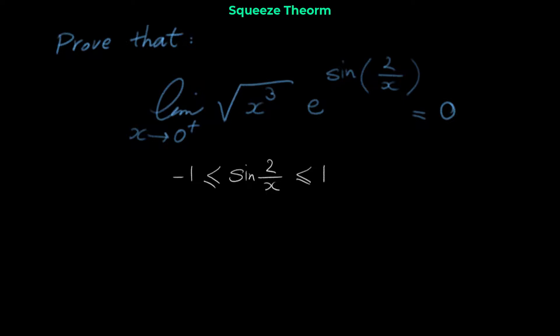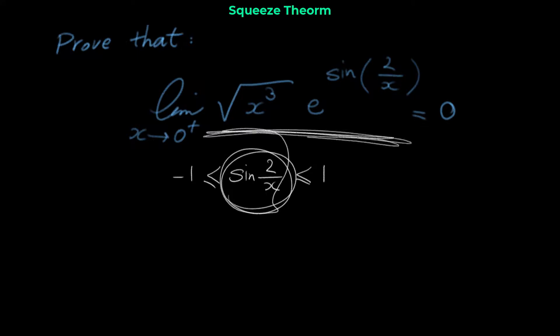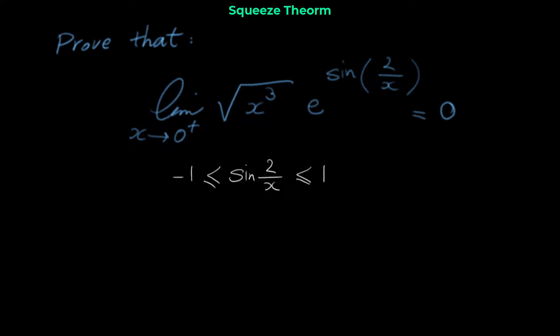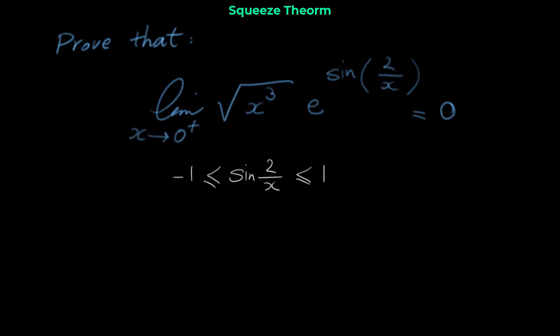Now we want to make the middle function look like the expression in our limit. What is the difference? There's an e. So we raise e to the power of each part of the inequality. We get: e^(−1) ≤ e^(sin(2/x)) ≤ e^1. We can do this because the exponential function is an increasing (one-to-one) function. Don't worry too much about that — just learn the method.